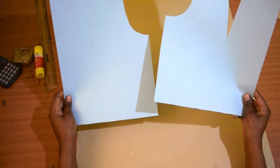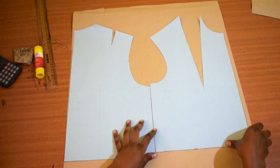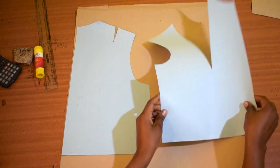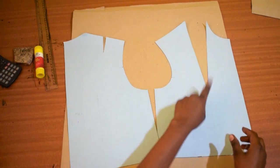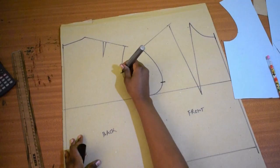What I have here are size 12 blocks. Trace out the front and the back. This is the front, the one with the dart. And this is the back, the one with the small dart and the front with the big dart. These are the balance marks.